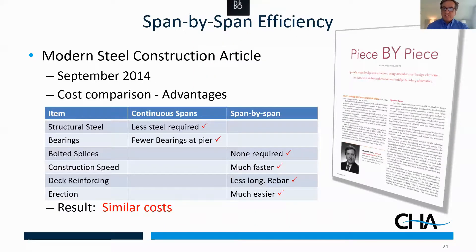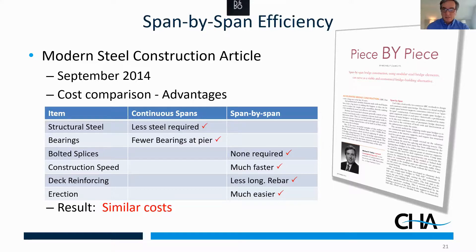Span-by-span efficiency has been a common question. In a paper I wrote for Modern Steel Construction, we compared a two-span continuous bridge with a link slab bridge of the same span and dimensions. For the continuous span: less steel and fewer bearings. For the link slab bridge: no bolt splices, which is a significant cost savings, faster construction speed, less deck reinforcing, and much easier erection. When you add up all the costs, they come out about the same price. So there is no real cost disadvantage to link slabs — which is an important thing to know.